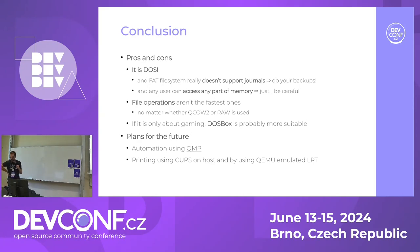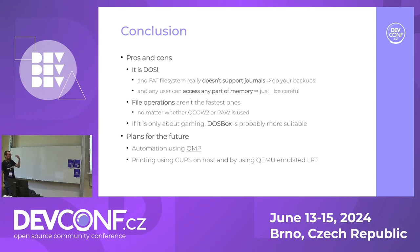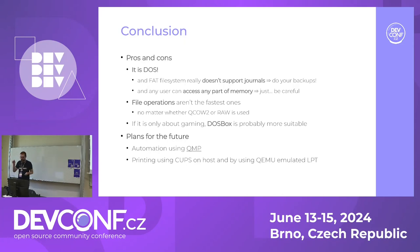My plans for the future: I plan to do some automation using QMP, which is a JSON-based protocol you use to communicate between the QEMU machine and the host - QMP stands for QEMU Machine Protocol. You can do a lot of magic with that. And because we're talking about QEMU, you can emulate a lot of things, for example an LPT port. So I plan to manage printing using CUPS - I'll press the print key in FreeDOS and do some Python scripting on the host to handle that.